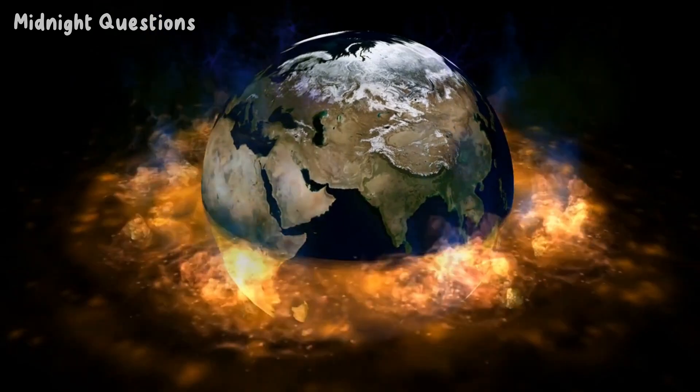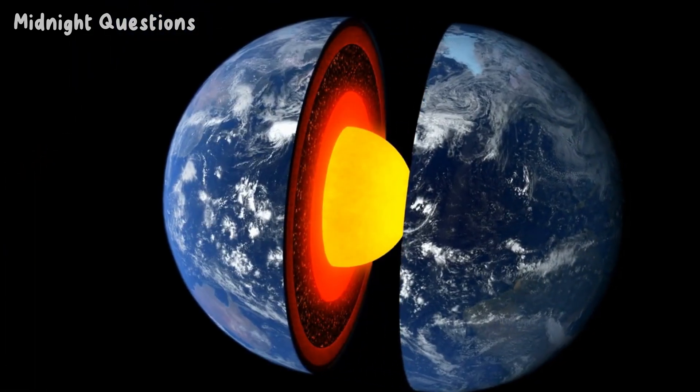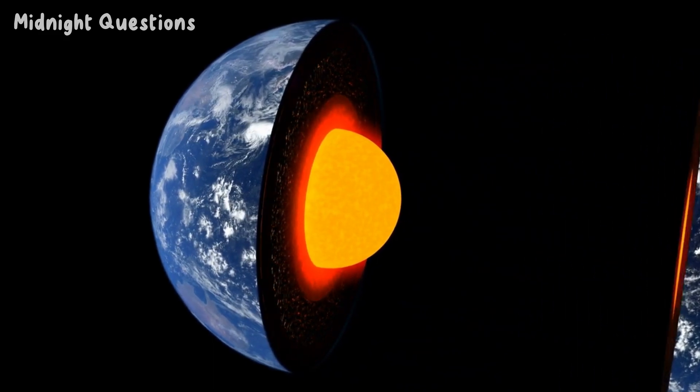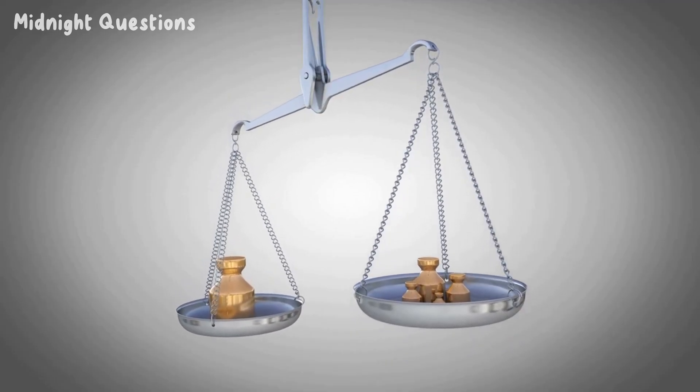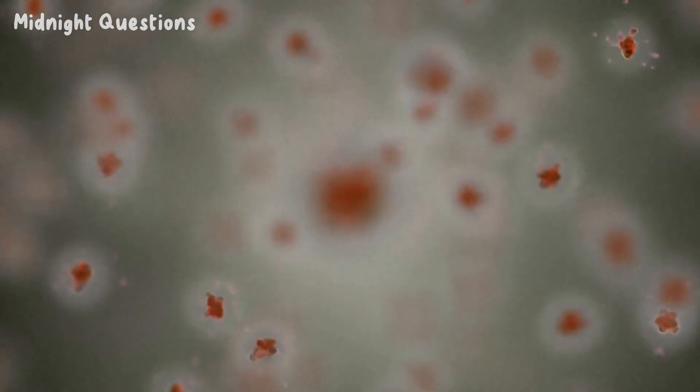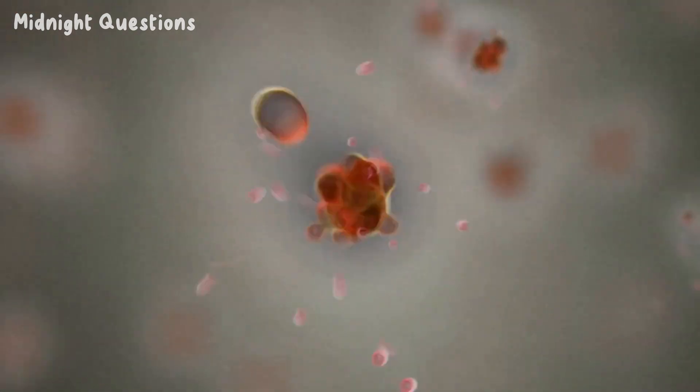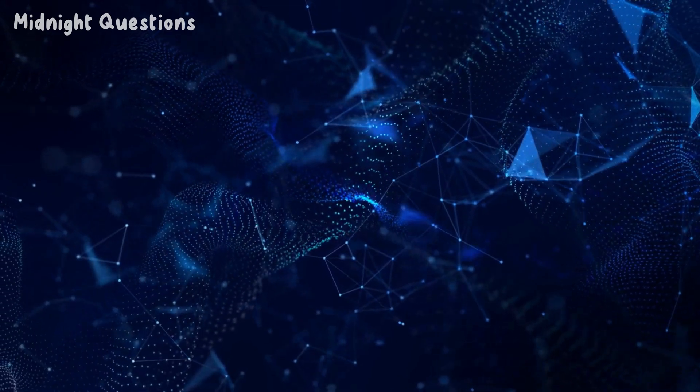The Earth's core isn't just hot, it's also under incredible pressure. The pressure at the Earth's core is estimated to be around 3.6 million atmospheres, which is equivalent to the weight of 3.6 million Earths pressing down on a single point. This immense pressure causes the atoms in the core to be squeezed together, which makes them more likely to collide and release energy in the form of heat.